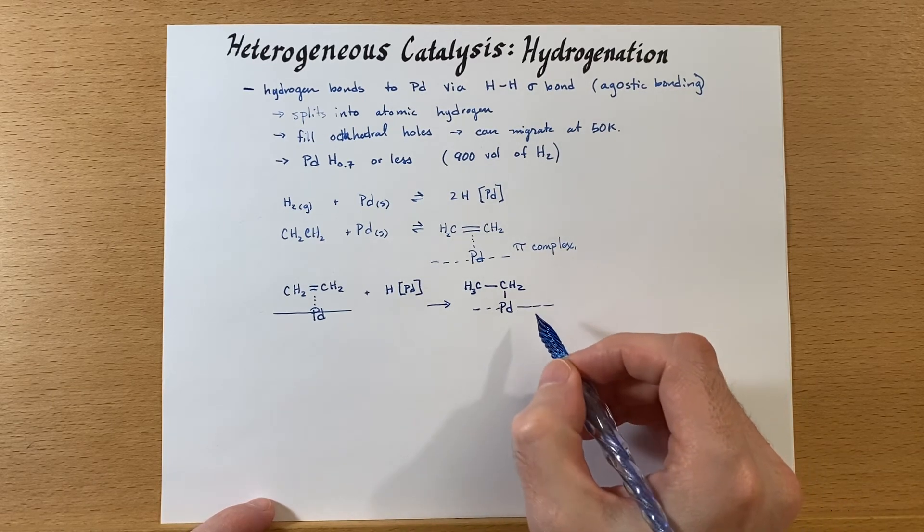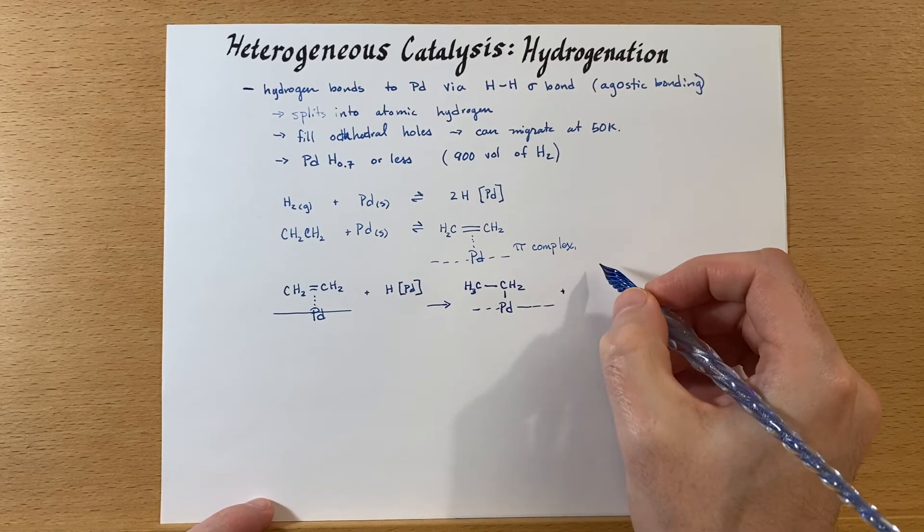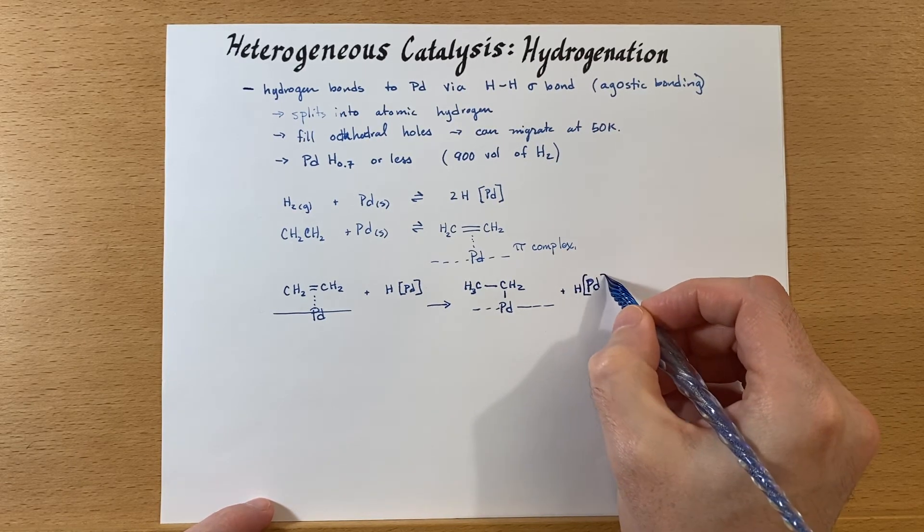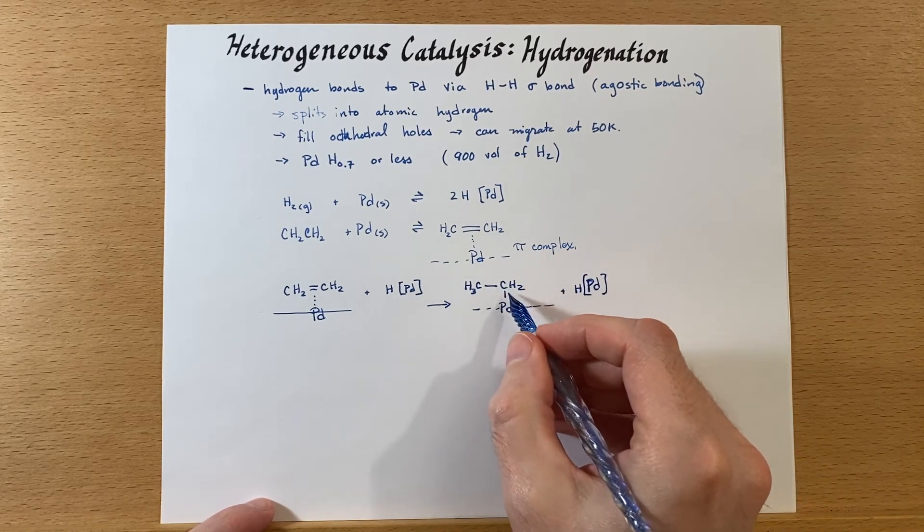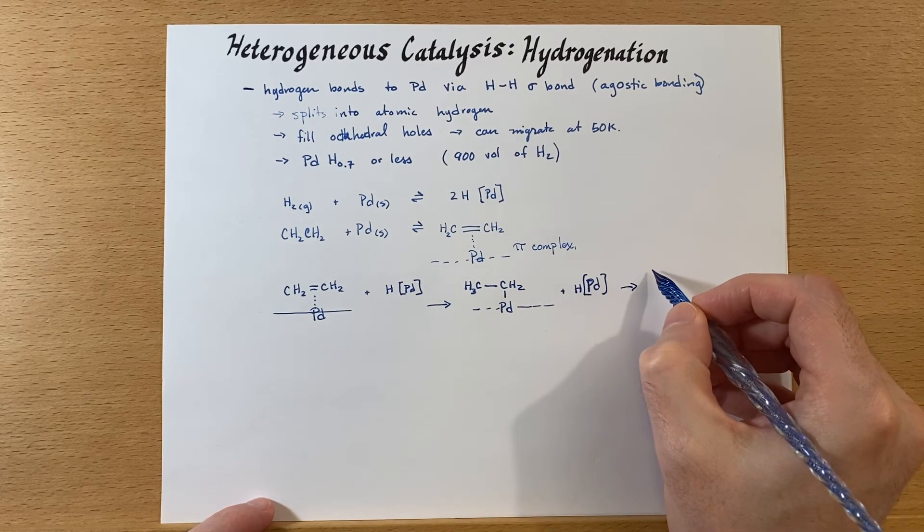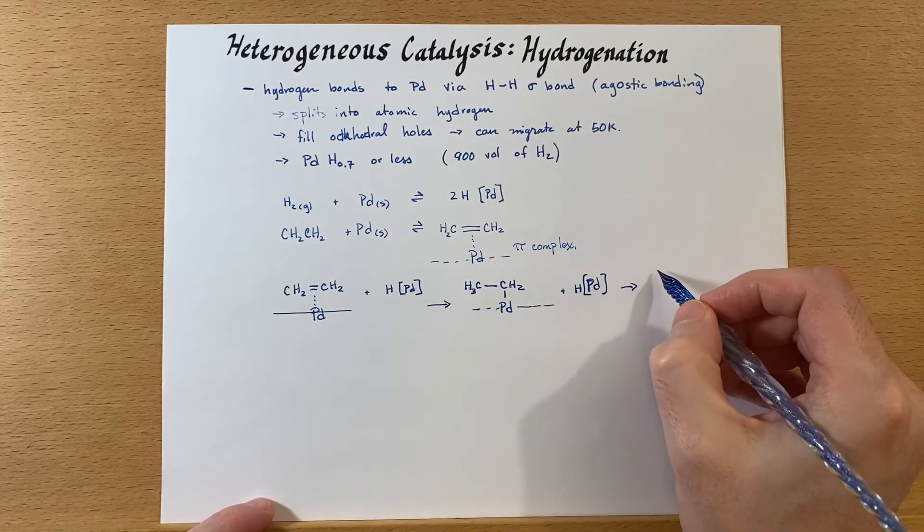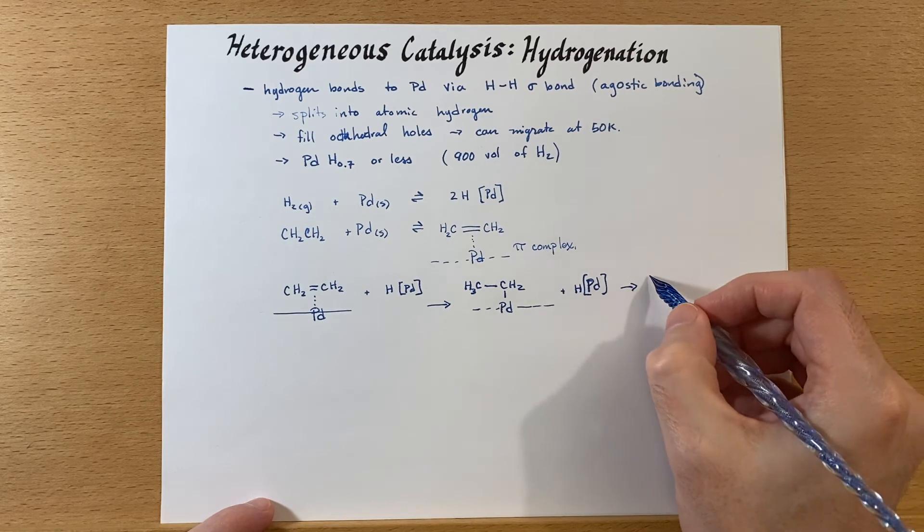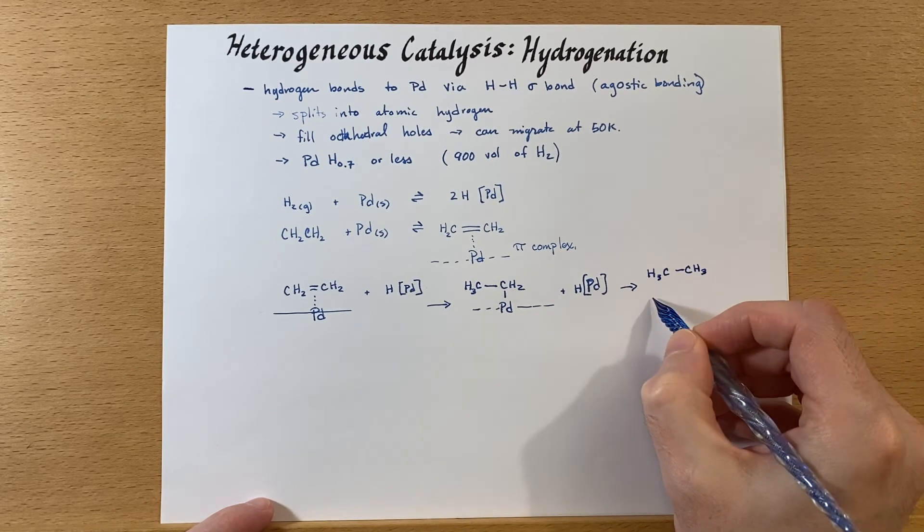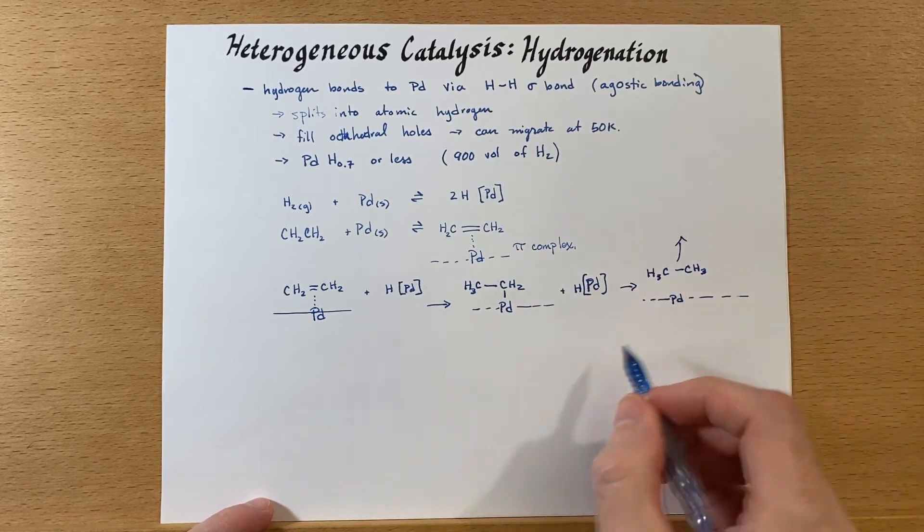And then next in what is supposedly the rate determining step, we have some more hydrogen migrate and interact with the second carbon. Once it does that, we will release this from the surface because the hydrogen will bond to the carbon, and that is an exothermic process as well.